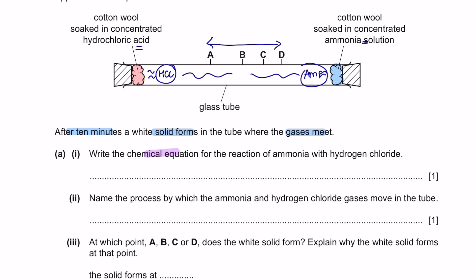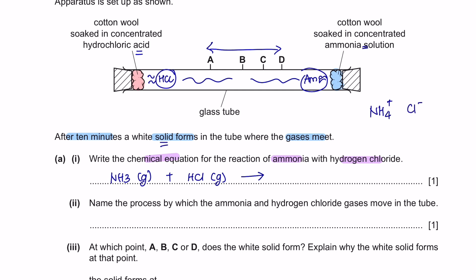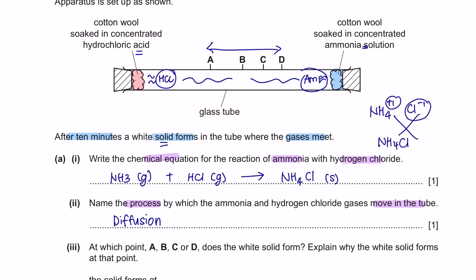Question A part 1. Write the chemical equation for the reaction of ammonia and hydrogen chloride. This is not exactly from chapter 1, but we can still answer them. Ammonia is NH3 and the state is gas. Hydrogen chloride is HCl and the state of matter is gas, which produces ammonium chloride, which is a solid. Ammonium has a charge of positive 1 and chloride has a charge of negative 1. When they are crossed, it will form NH4Cl and the state is solid. Next question 2. Name the process by which the ammonia and hydrogen gases move in the tube. So, we have learnt before that when particles move from an area of high concentration to low concentration, it is known as diffusion. So, the process is diffusion.